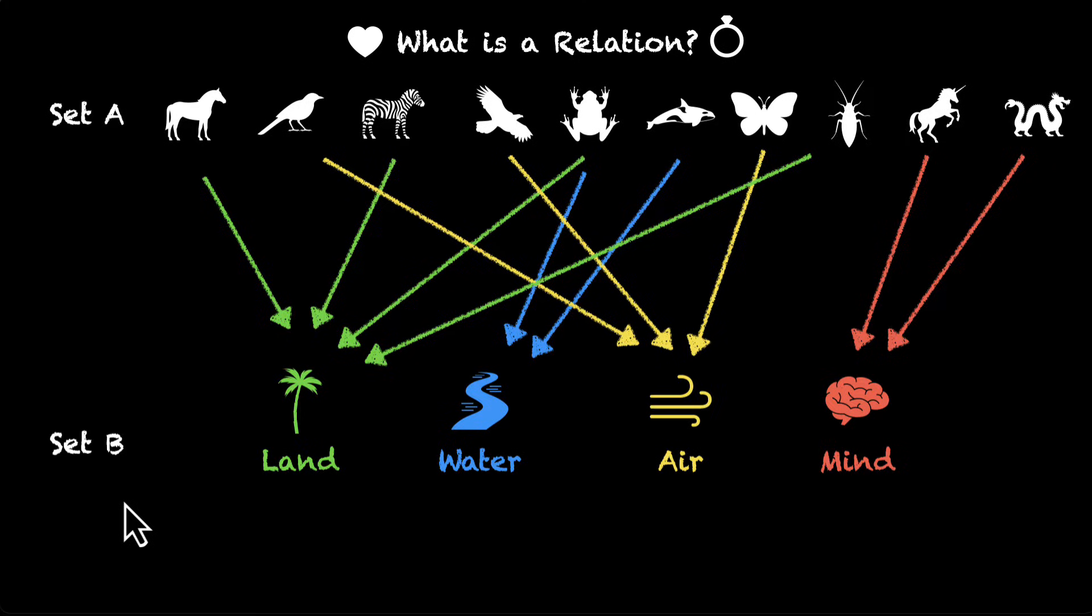But what if we didn't stop at that? What if we didn't stop at just these arrows? What if we connected all possible combinations and made all possible ordered pairs? What if we had more arrows? Horse lives in water, horse lives in air, mind, and then bird has land, water, air, and mind, and then we kept going.